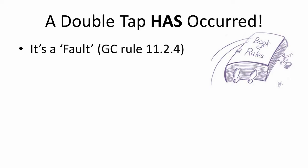So what happens if your opponent really has done a double tap, or they did not strike with the face of the mallet? Under the GC rules, it's called a fault.